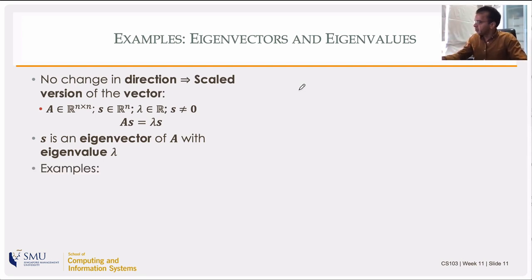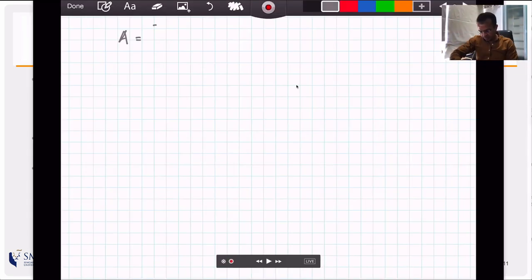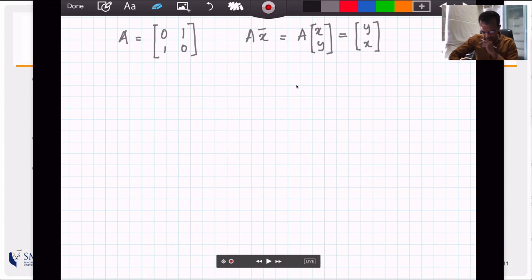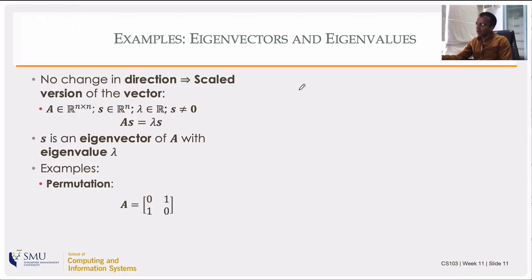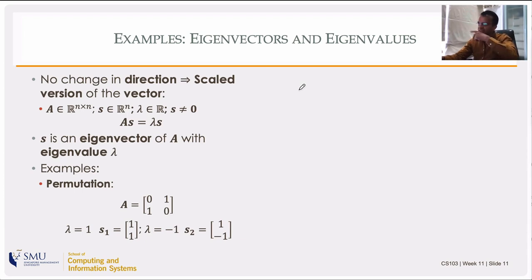For the permutation matrix A = [[0,1],[1,0]], applying it to [x, y] gives [y, x]. If x and y are both 1, you get the same vector back — that's an eigenvector with eigenvalue 1. If you have [1, -1], shuffling gives [-1, 1], which is the same as -1 times the original vector. So A times [1, -1] equals -1 times [1, -1]: that's the form As = λs, where s is the eigenvector and λ = -1. Two eigenvectors and two eigenvalues.